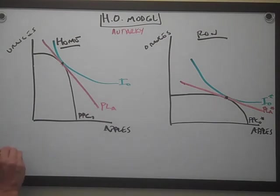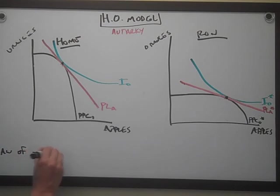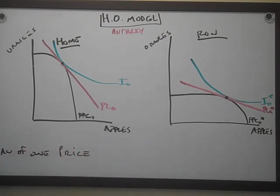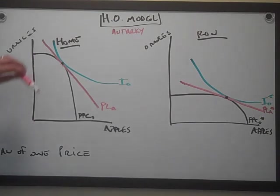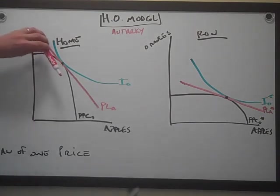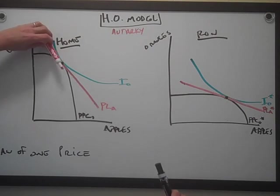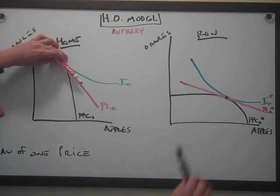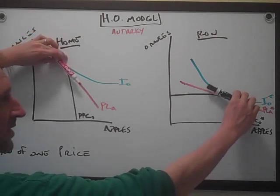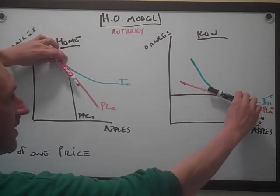Somebody's going to figure that out and engage in trade. When they do, the law of one price is going to tell us that these prices converge. Pay attention because this is the key part of this model — this is the part where people get stumped or tripped up. You wind up with this price line and then you get this price line here.